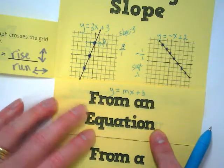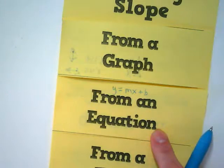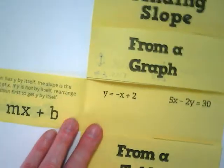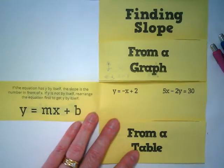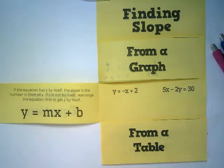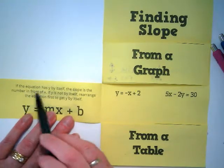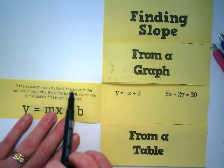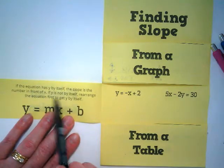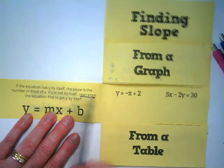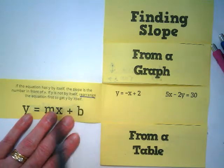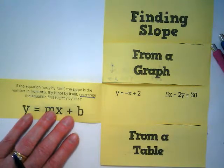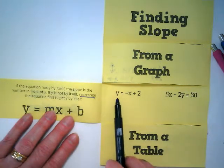That leads us to finding slope from an equation. Open this one up, and what do you see? We see equations, but what equation do you see on the left? y equals mx plus b. Now, I want you guys to read the very first statement with me out loud. If the equation has y by itself, the slope is the number in front of the x. If the y is not by itself, what do we have to do? Rearrange the equation to get y by itself. This goes back to our work with literal equations. If it's not solved for y, we need to solve it for y. This one is solved for y. The y is by itself. Is the y by itself here? No.